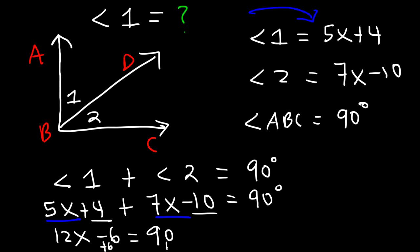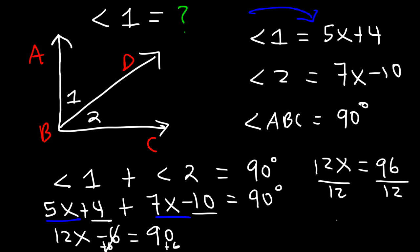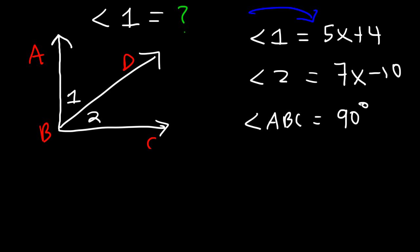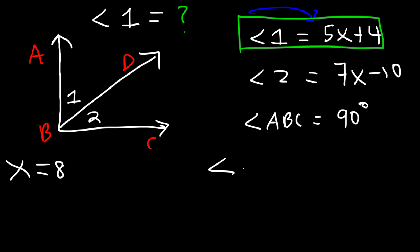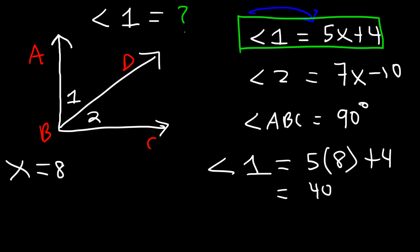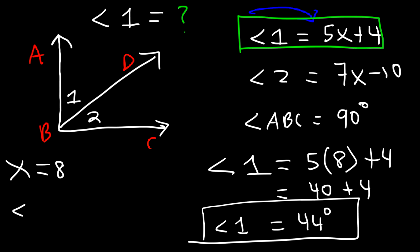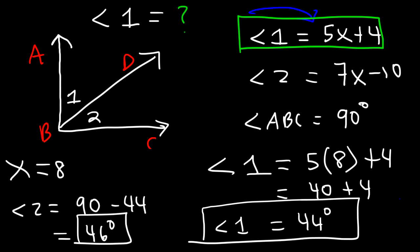Add 6 to both sides — 12x equals 96. Divide both sides by 12: 12 goes into 96 eight times, so x equals 8. Now we can find angle 1: it's 5 times 8 plus 4. 5 times 8 is 40, and 40 plus 4 is 44 degrees. Angle 2 would be 90 minus 44, which is 46 degrees, but the answer we're looking for is angle 1, which is 44 degrees.